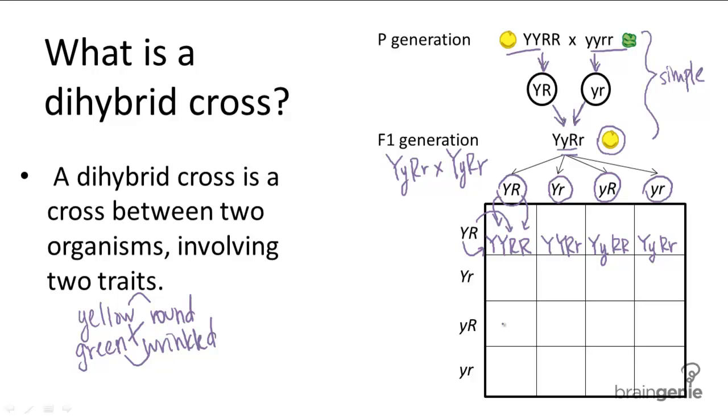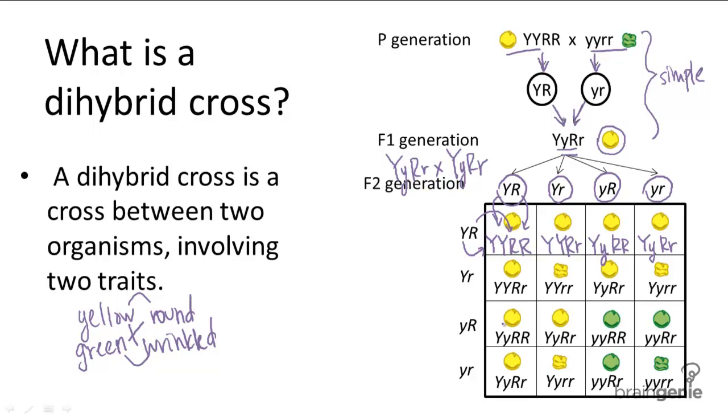Now you can fill out the entire chart and it looks something like this in the end. It tells you all the genotypes and all the phenotypes of your pea plant offspring from a dihybrid heterozygous cross.